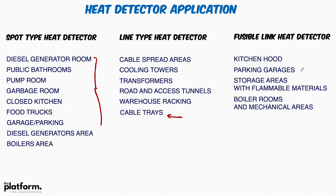Parking garages are also suitable for fusible link heat detectors, as are storage areas with flammable materials, boiler rooms, and mechanical areas — all special installations where it may not be practical to use spot type heat detectors, so other types of heat detector can be applied.